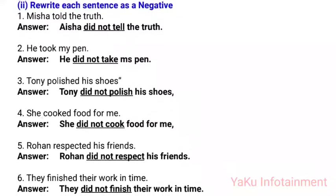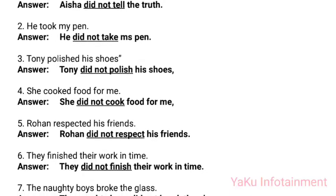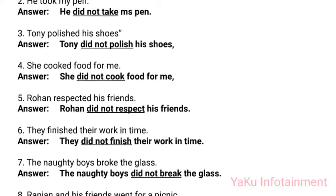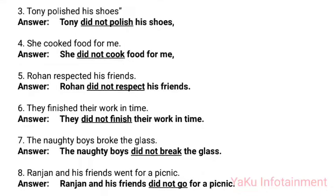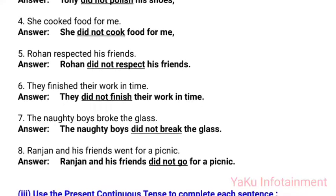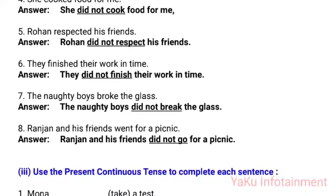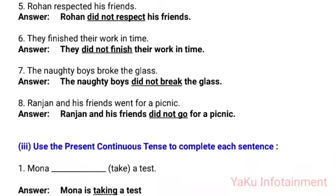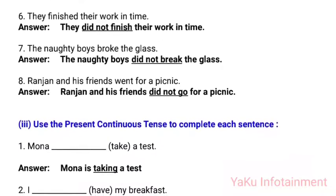Rewrite each sentence as a negative: (1) Nisha told the truth → She did not tell the truth. (2) He took my pen → He did not take my pen. (3) Tony polished his shoes → Tony did not polish his shoes. (4) She cooked food for me → She did not cook food for me. (5) Rohan respected his friends → Rohan did not respect his friends. (6) They finished their work in time → They did not finish their work in time. (7) The naughty boys broke the glass → The naughty boys did not break the glass. (8) Ranjan and his friends went for a picnic → Ranjan and his friends did not go for a picnic.